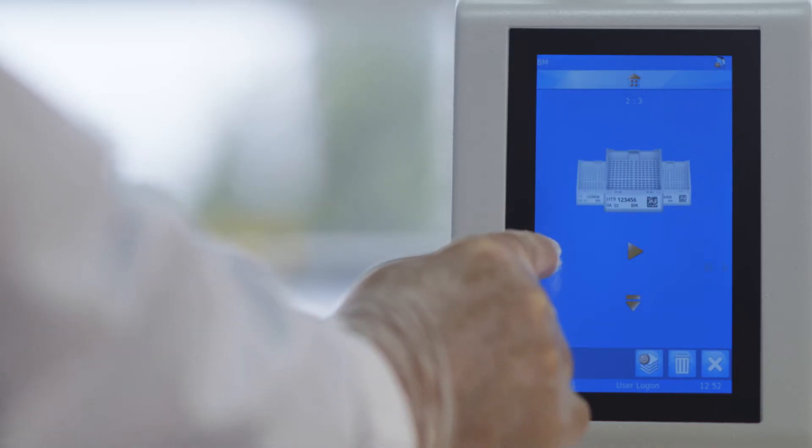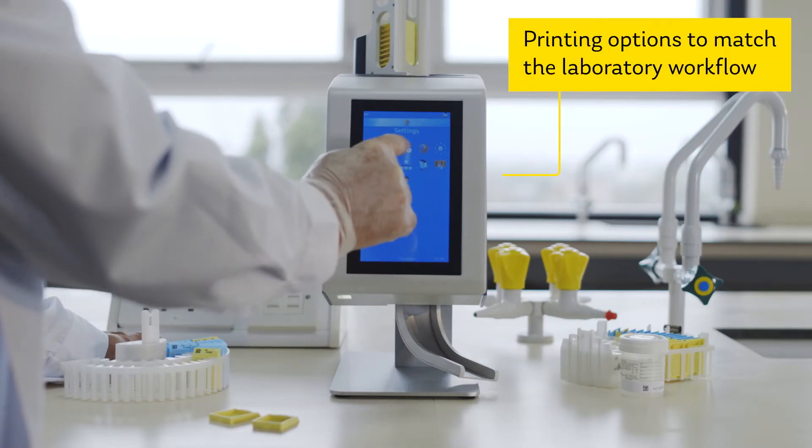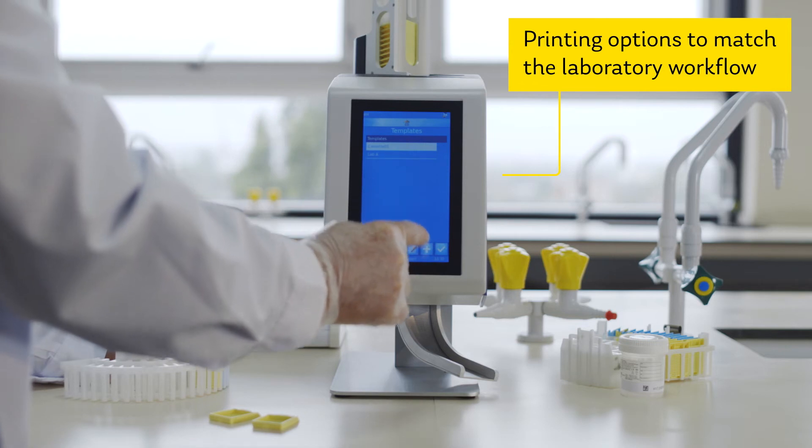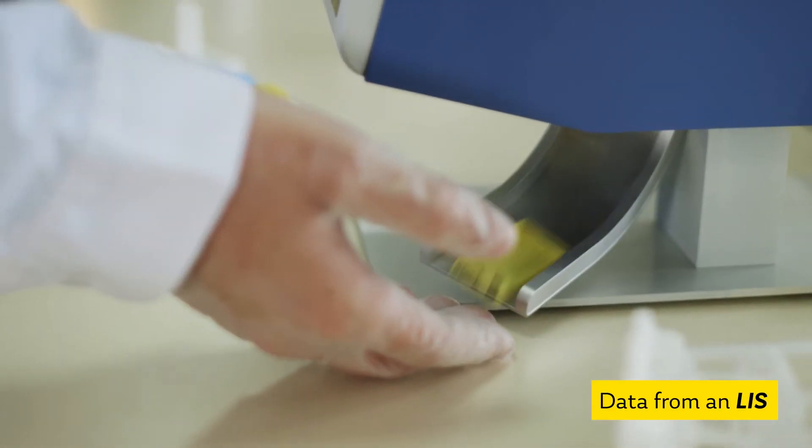The printer can be driven in a number of different ways to give you control and flexibility. A cassette can be printed automatically on receipt of data from an LIS.